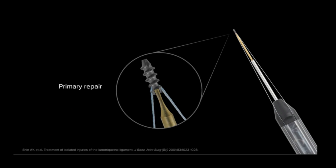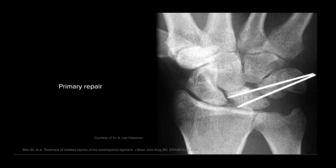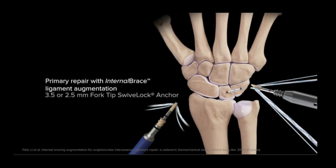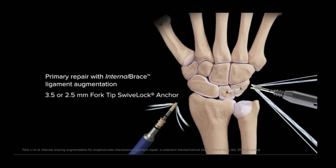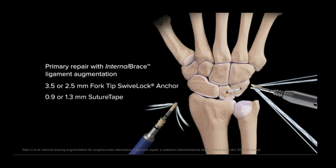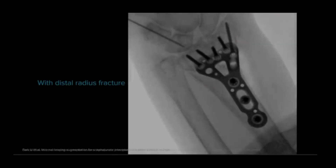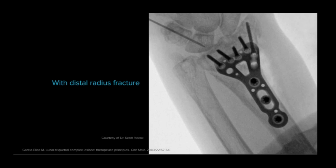The anatomic lunotriquetral link can be easily restored in an isolated injury. This can be performed open or with arthroscopic assistance using suture anchors or percutaneous Kirschner wire fixation to pin the lunotriquetral interval. For lunotriquetral primary repair with internal brace ligament augmentation, either a 3.5 or 2.5 mm fork tip swivel lock is used along with 0.9 or 1.3 mm suture tape and 3.0 FiberWire. The 3.0 FiberWire is used for the primary repair of the avulsed LT ligament, while the suture tape provides augmentation. If the acute tear is associated with a distal radius fracture, pinning of the lunotriquetral joint with a Kirschner wire is usually performed after proper reduction and stable fixation of the distal radius. In this case, the scapholunate dissociation must be addressed initially.